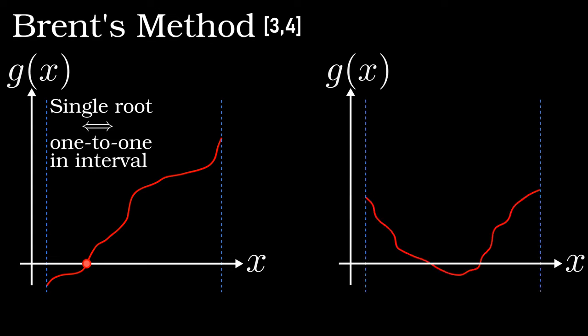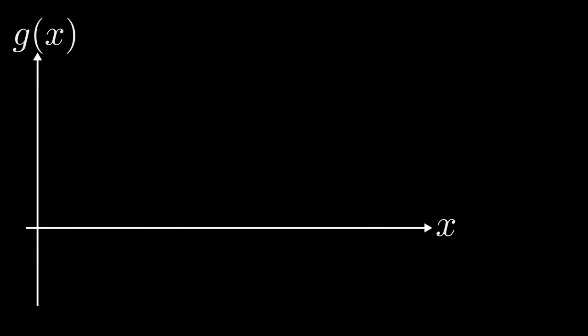Conversely, if there were multiple roots of g of x, this means that the original f of x is a many to one function. Okay, so assuming you do only have a single root in an interval of x from a to b, Richard Pierce Brent has a few tricks to help you find it.